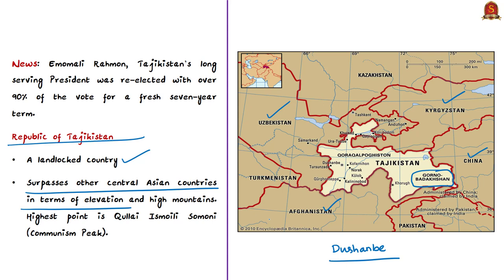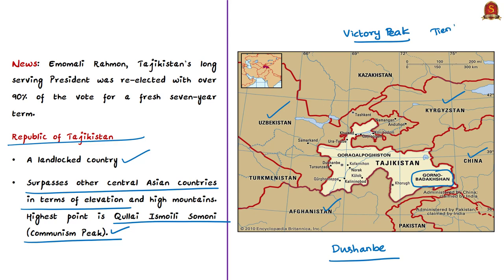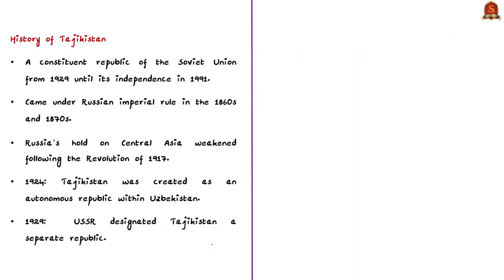The highest point in Tajikistan is Kulai Ismoil Somoni, earlier called Communism Peak, which was the tallest mountain in the former Soviet Union region, at an altitude of around 7,495 meters. Another peak recently discussed is Jengish Chokusu, also called Pik Pobedy or Victory Peak, the highest peak in Kyrgyzstan at an altitude of 7,439 meters, and also the highest peak of the Tian Shan mountains.